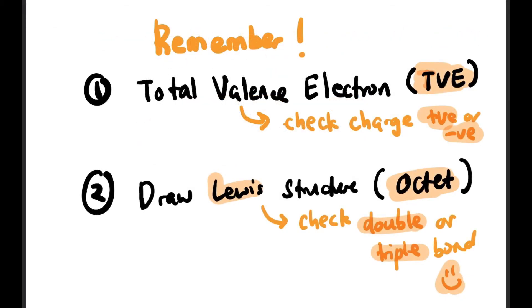Before that, let me remind you again the steps to draw Lewis structure. First, always calculate the total valence electron (TVE) and check the positive or negative charge involved. Then draw the Lewis structure and make sure everything is octet. If possible, do some double bond or triple bond.